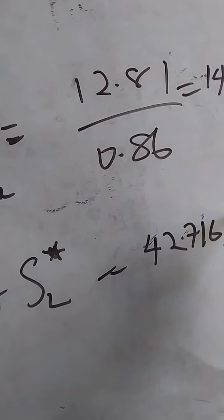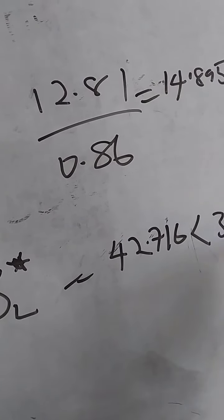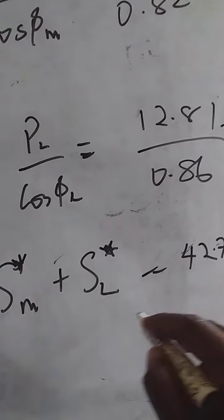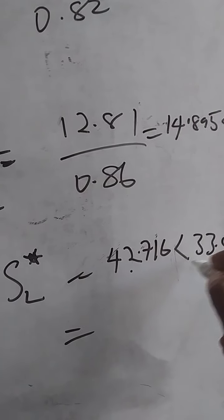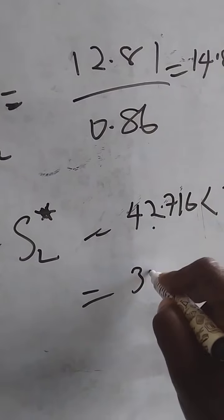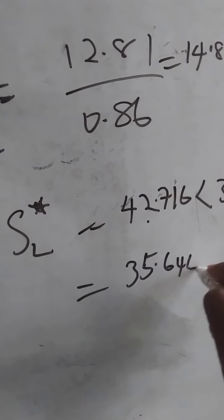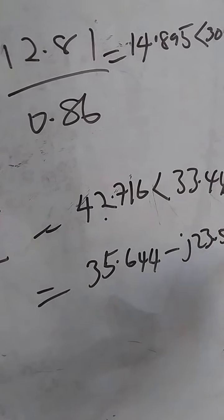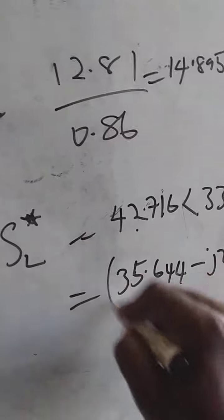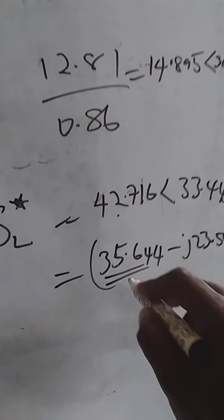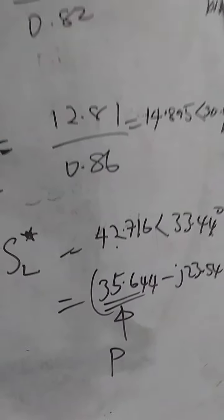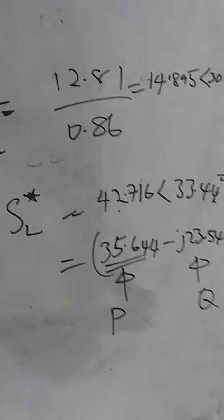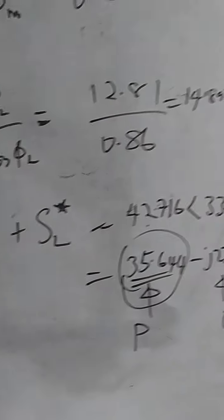42.716 at angle 33.44 degrees KVA. That is the total capacity, which, if you split into two, 42.716 cos theta, which gives you 35.644 minus j23.541 KVA. This is the real power that is being drawn, the actual power, and this one is the reactive power, and this is the power that we are asked to determine.